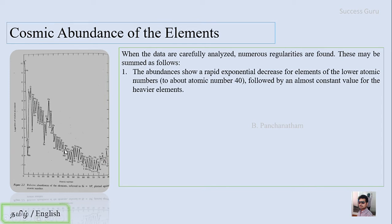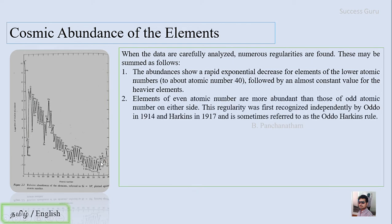You can see here this is the atomic number 40. From this side you can see a rapid decrease in the abundance of elements. Before 40 you can see the abundance is far higher when compared to the abundance of atomic number greater than 40.